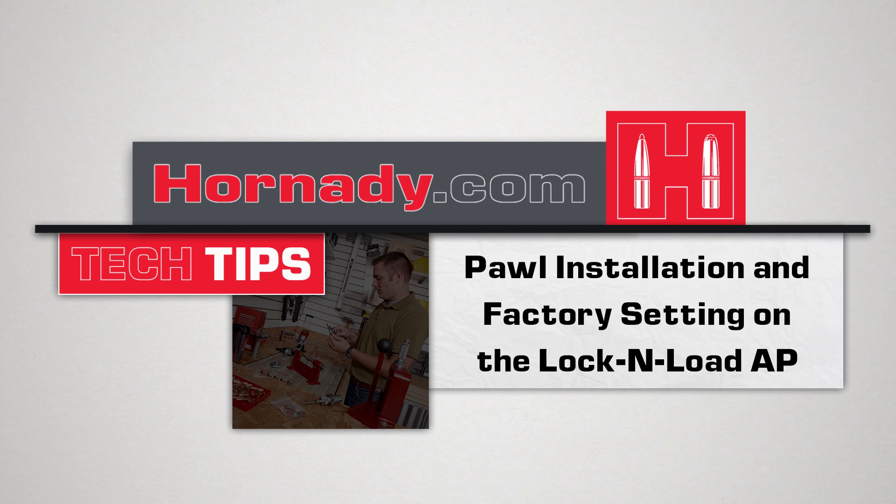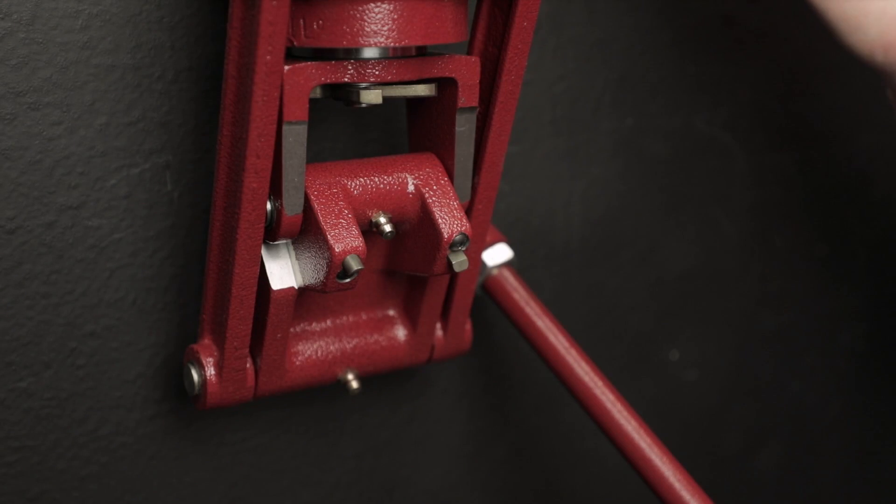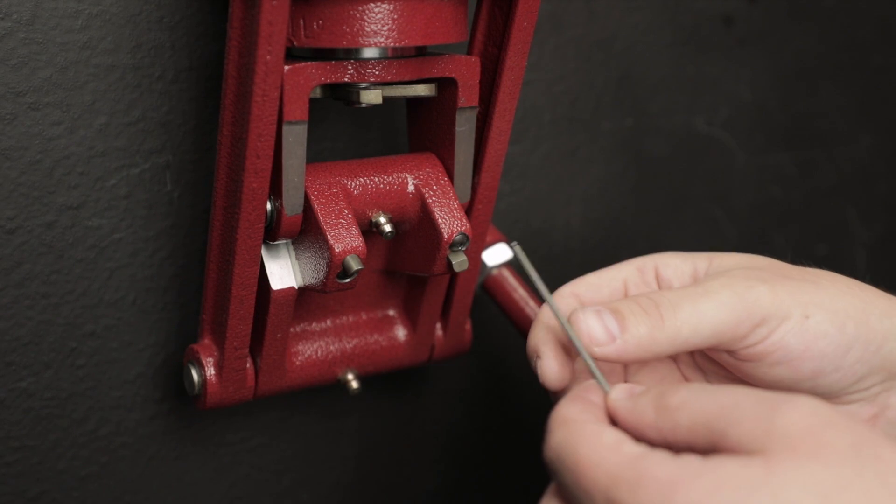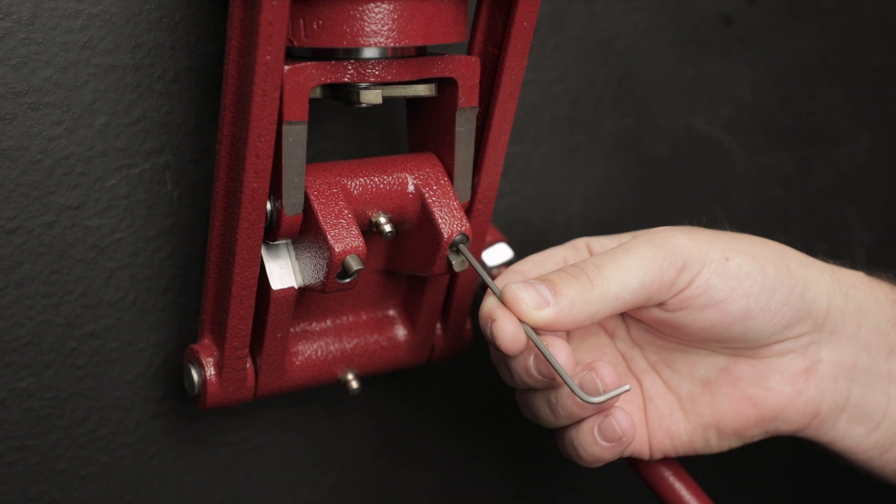To remove or replace the pawls on an AP press, if you already have a factory setting where it's working, what we can do is verify exactly where it's at.